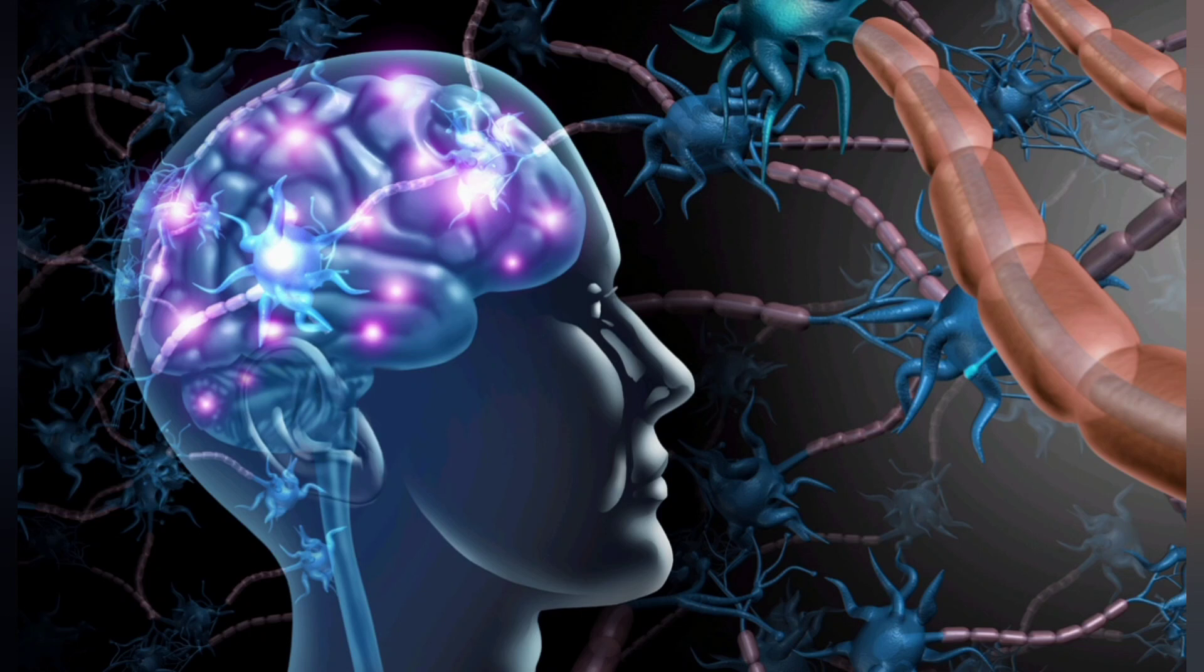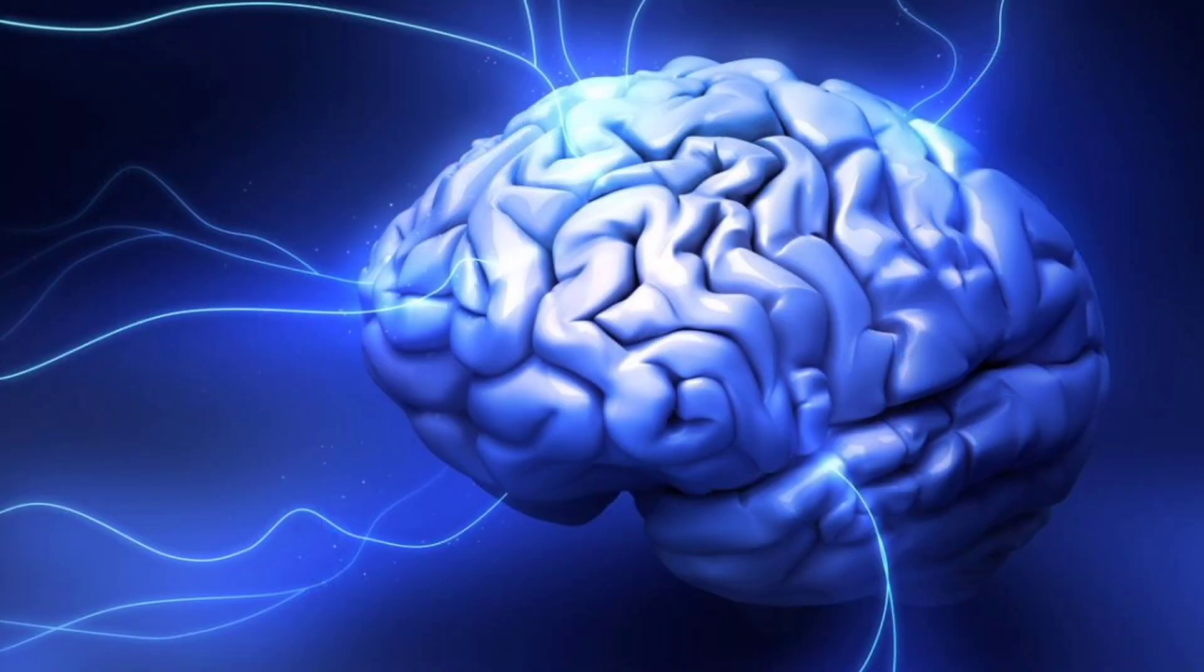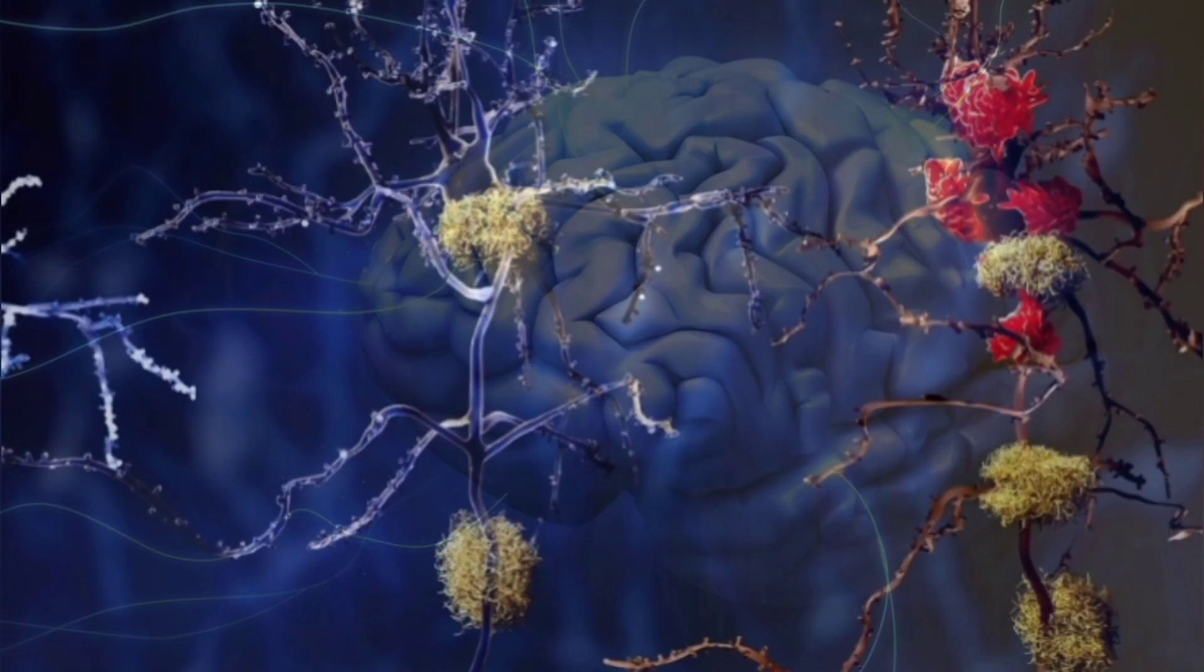Three of the clusters hadn't been seen before, and one of them was more common in people with Alzheimer's disease. This type of microglia has genes turned on that are involved in inflammation and cell death.